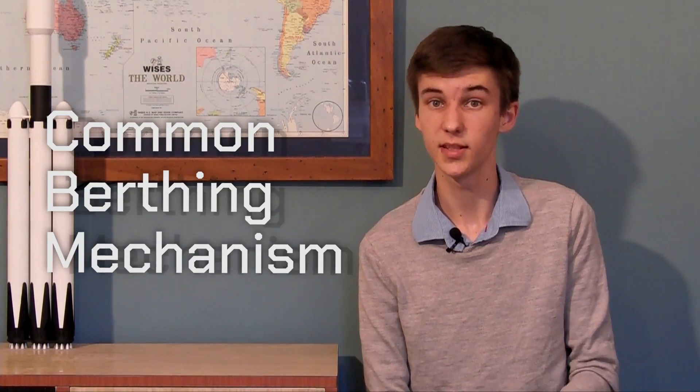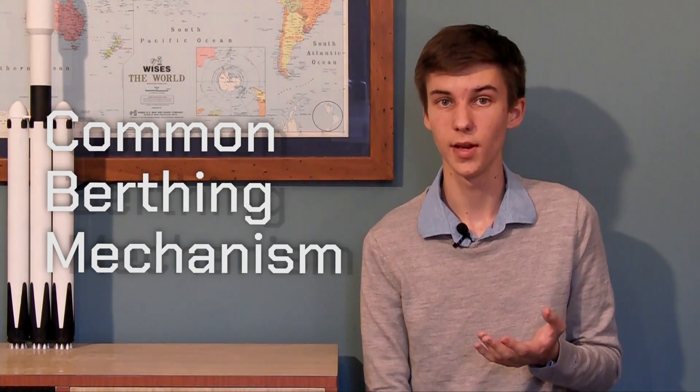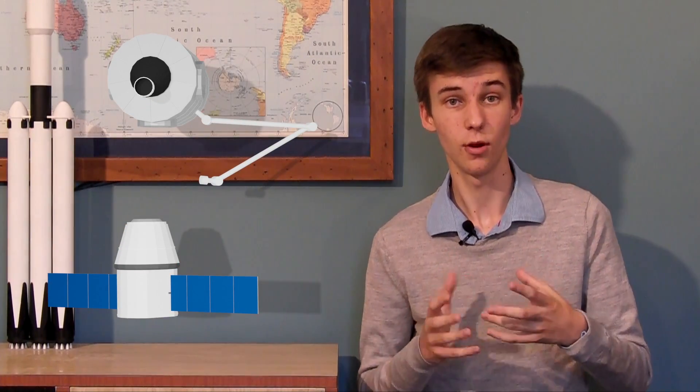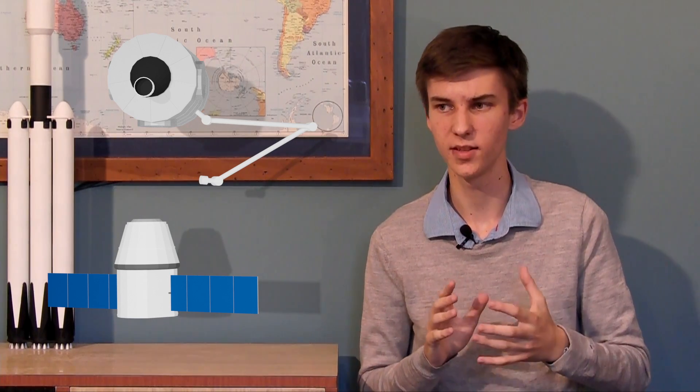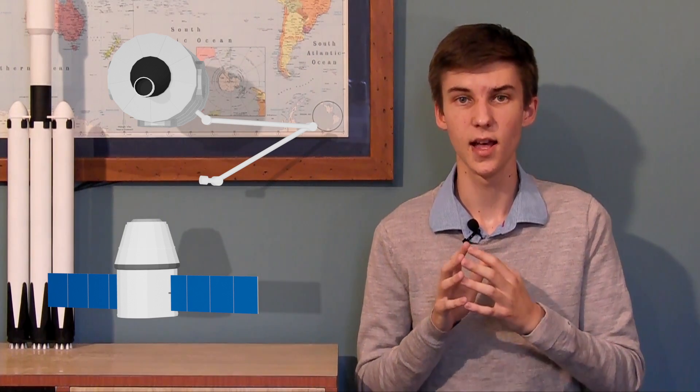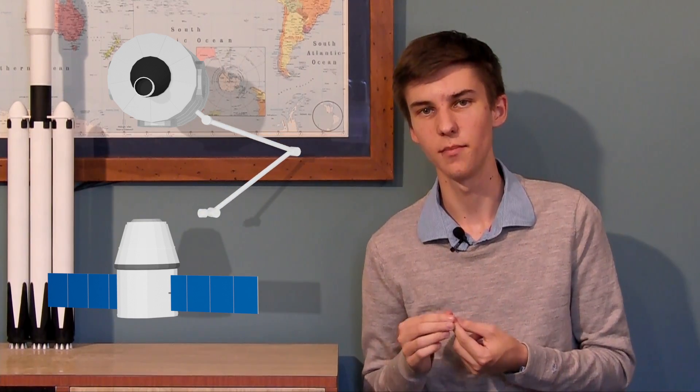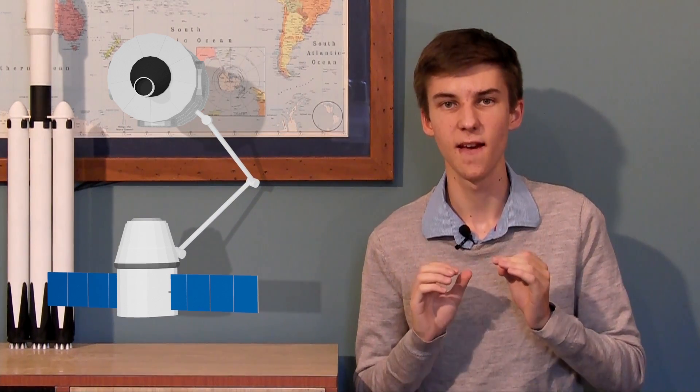The next system is called the Common Berthing Mechanism. It's technically not a docking port because a docking port is something you can attach to while using your own reaction control system to maneuver you into position. The Common Berthing Mechanism just requires way too much precision for that, because it's literally just these two rings that end up getting locked together. As such, we have to use the space station's robotic Canada arm to perform that precise fitting.